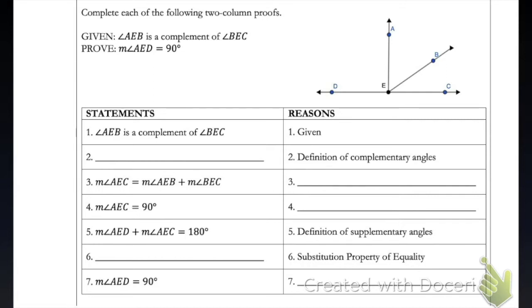In this first proof, the given information is that angle AEB is a complement of angle BEC, and we are asked to prove that the measure of angle AED equals 90 degrees. Line one has our given information. In line two, the reason is the definition of complementary angles — complementary angles add up to 90 degrees — so we can write that the measure of angle AEB plus the measure of angle BEC equals 90 degrees.